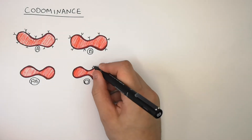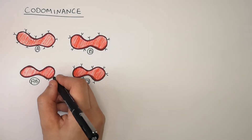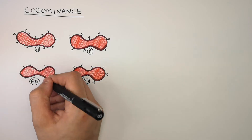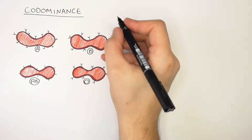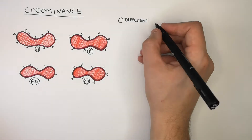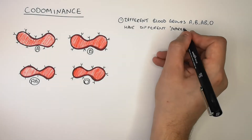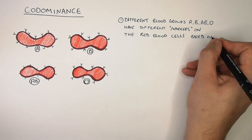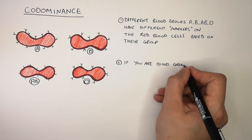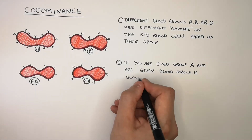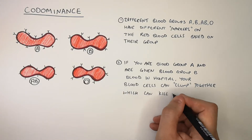Each of the blood groups will have a different marker on the cells. As you can see here, blood groups A, B, AB, and O all have different markers on their cell membranes. This is important because if you're blood group A and you are given blood group B blood in hospital, your blood cells can clump together, which can kill you.